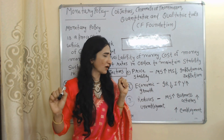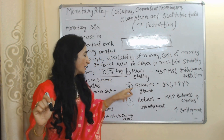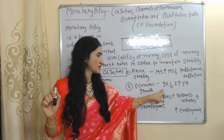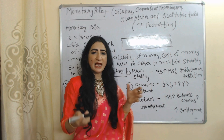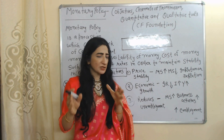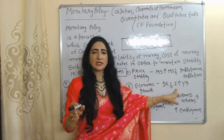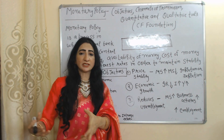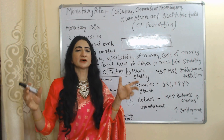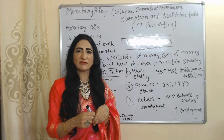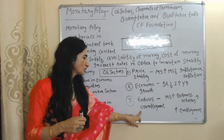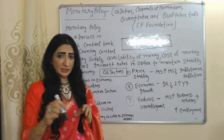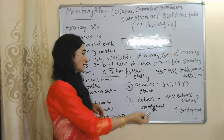Economic growth — through monetary policy, the central bank reduces interest rate. As interest rate reduces, investment increases. As investment increases, output increases, employment increases, income increases — eventually our economy grows. Reduce unemployment — through monetary policy, the central bank increases money supply in the economy.